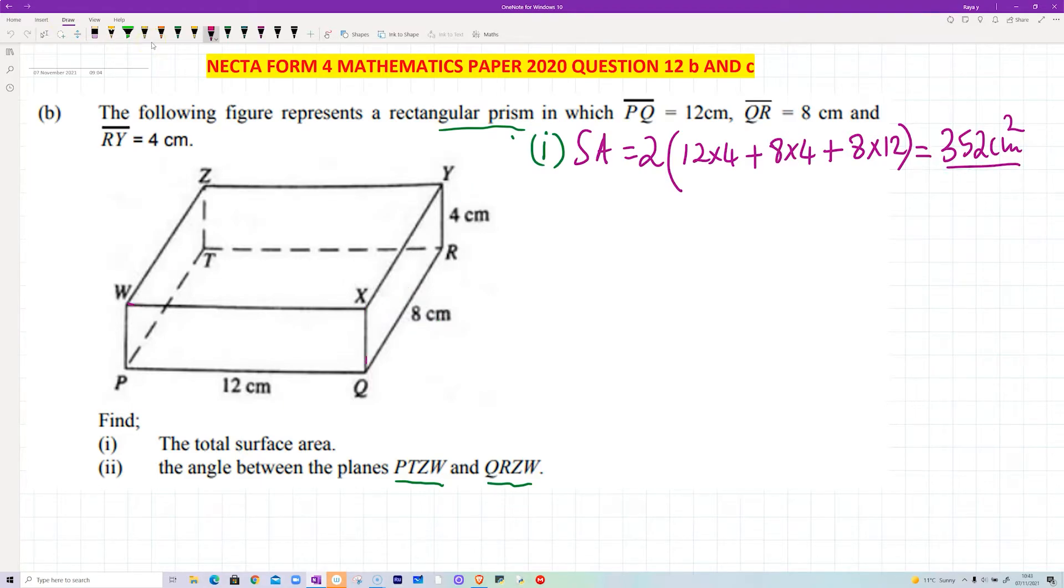Now for part II, we are asked to find the angle between the planes PTZW and QRZW. So what is that plane? It's going to be this surface over here, PTZW. Imagine this is a wall. And then the plane QRZW. Now where is that? Well, that plane, you can think of it as a wall, it's hanging. So let's just draw that wall in.